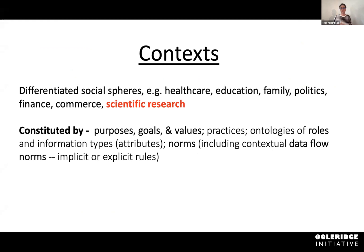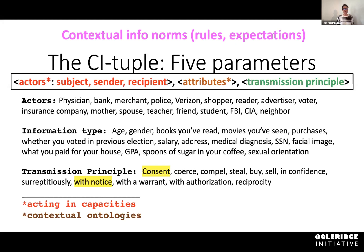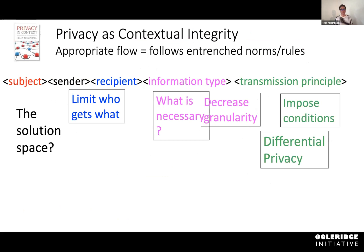Healthcare, for example, is defined in terms of alleviating suffering, curing diseases, and so forth, and certain values like doing this equitably. There are also norms that govern these contexts, including informational norms. These are fundamental to contextual integrity, which proposes five parameters required to assess whether a given practice conforms with contextual integrity or not.